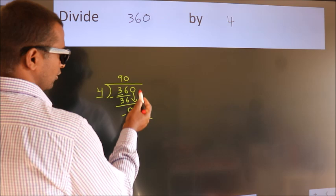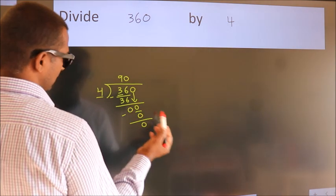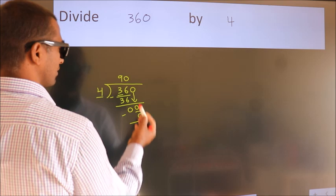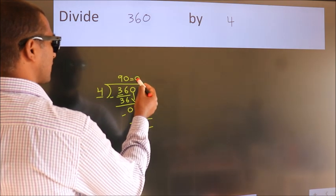After this, no more numbers to bring down. And we got remainder 0. So this is our quotient.